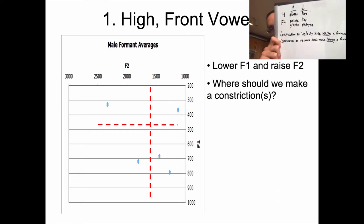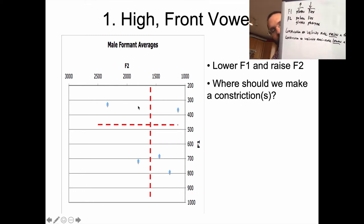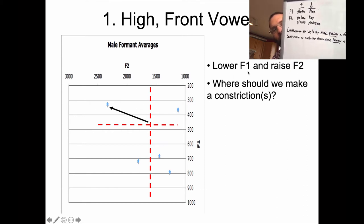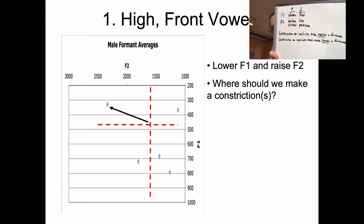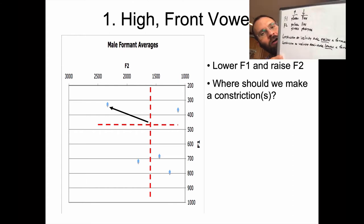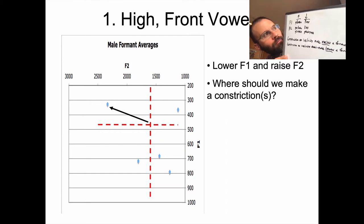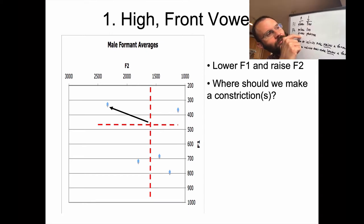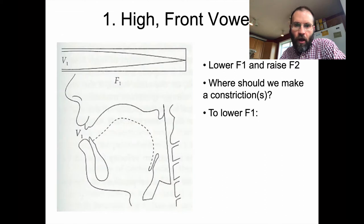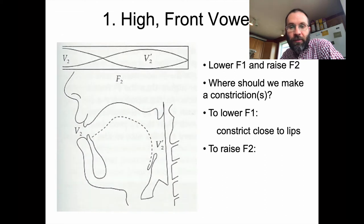Let's figure out how we get to the four corners of the vowel space. Starting with /e/, a high front vowel — we want to lower F1 and raise F2. Hopefully you can see the whiteboard; if not, you can still go back to the previous slides and lecture notes. We want to be in this part of the space, so some combination of constricting at the lips, palate, and glottis. To lower F1, constrict close to the lips; to raise F2, constrict at the palate.